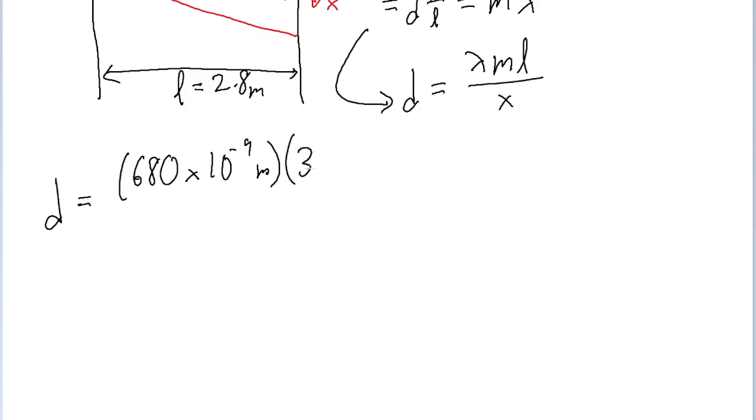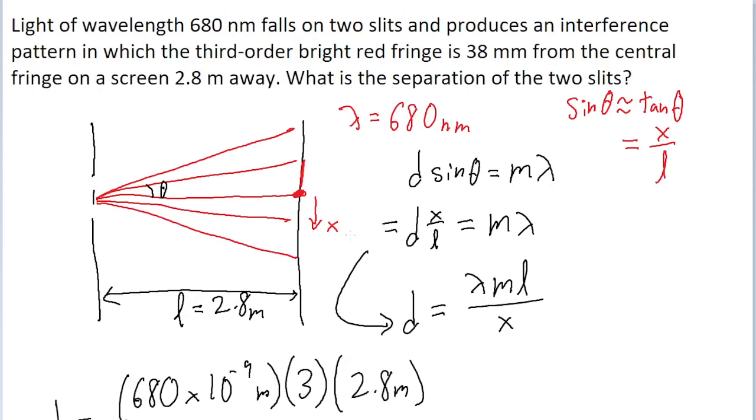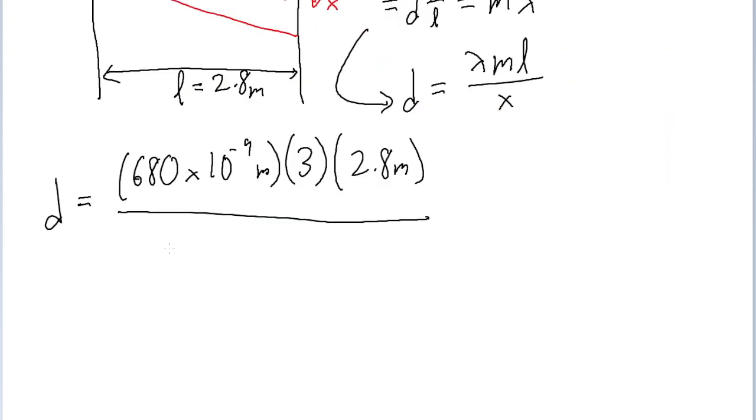So m is equal to 3. We multiply by L, the length between the screen and the slits, which is given as 2.8 meters. And we divide by x. The problem tells us that the third order fringe we're looking at is at a distance of 38 millimeters from the central point, so that's 38 times 10 to the power of negative 3 meters.